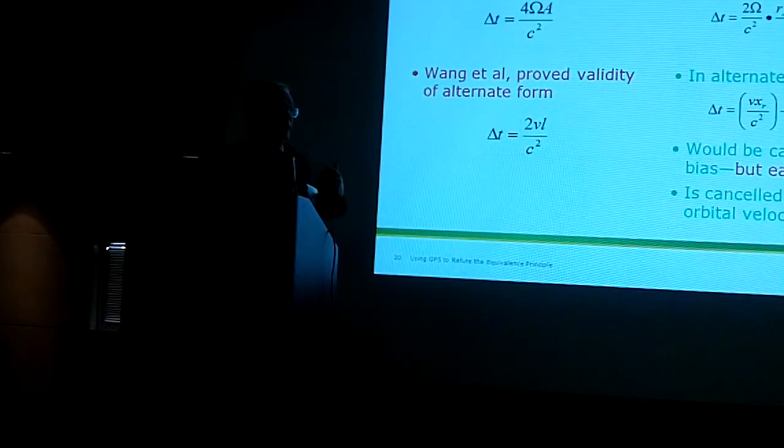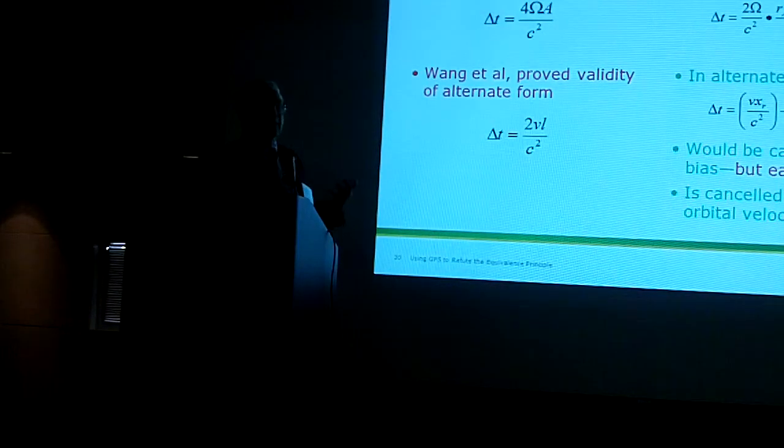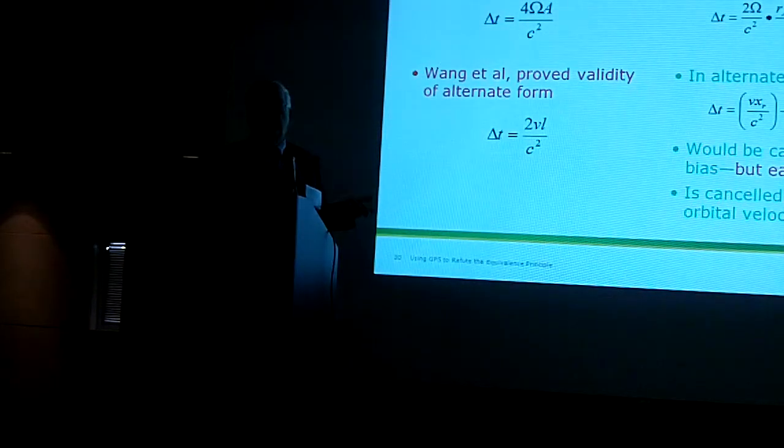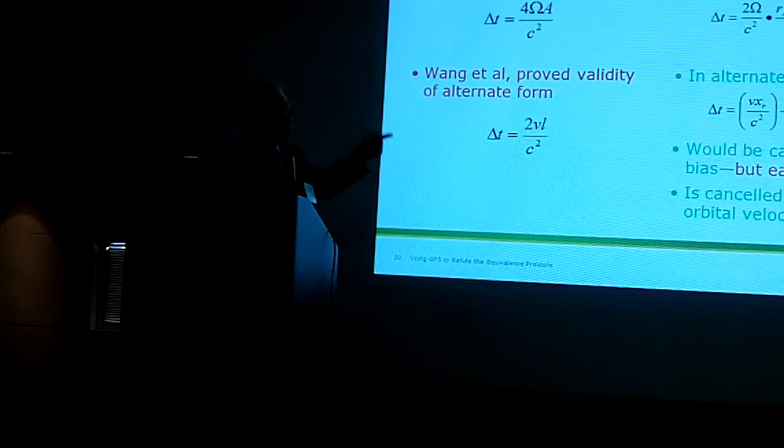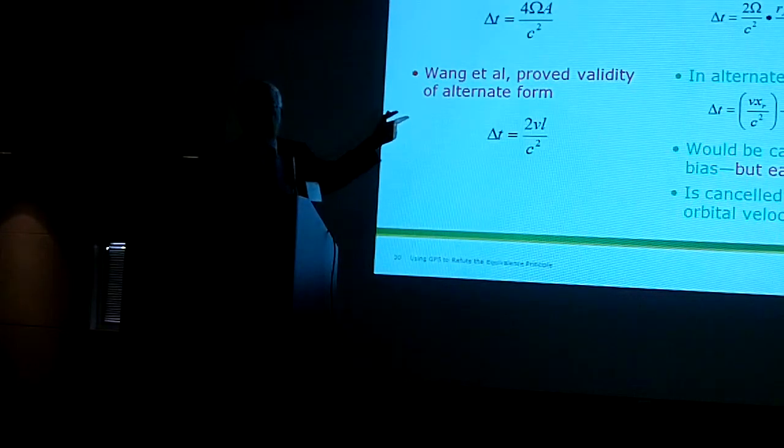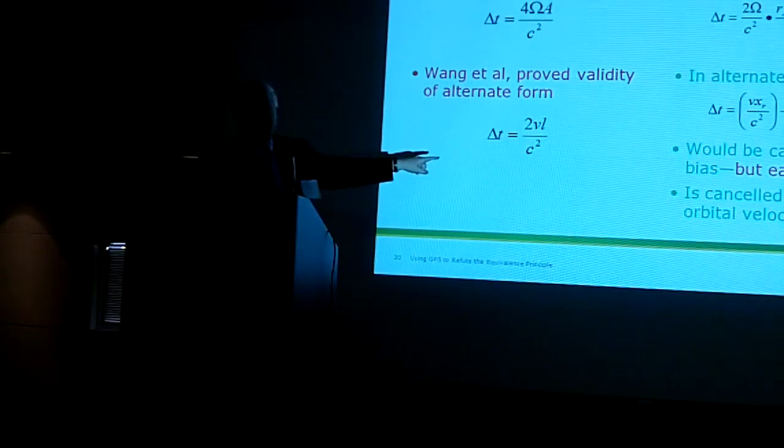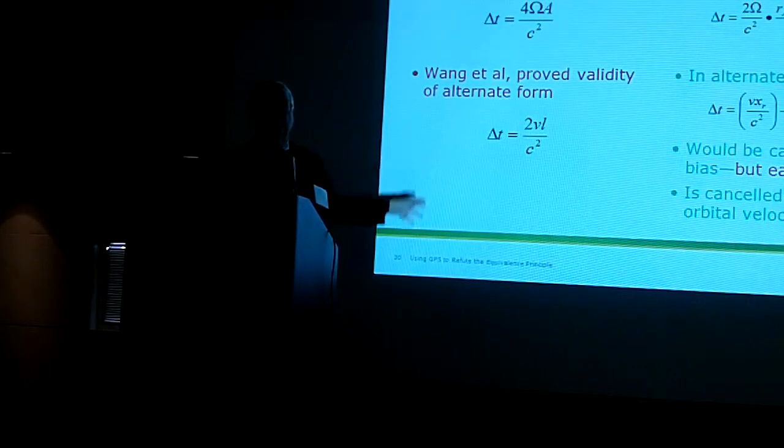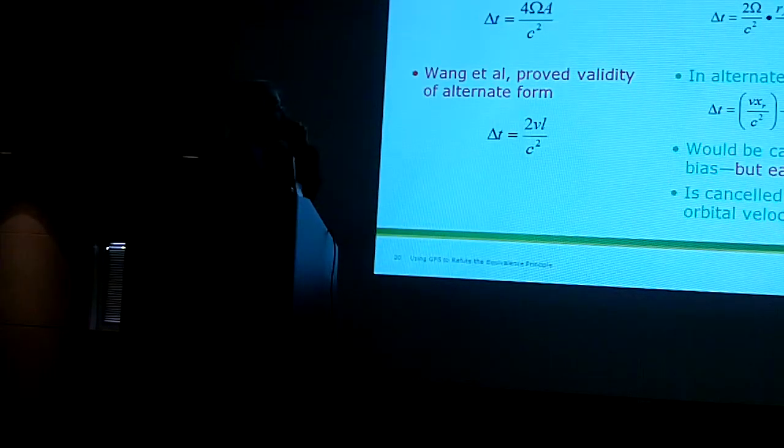But then I could cancel that out if I put a clock bias of minus V over VXR over C squared, which is exactly the clock bias that we showed difference between Lorentz and Celery transformations. Now, we can't do that for all these receivers because they're all spinning in a different direction. So I can't put a clock bias in the satellite that will account for that. So we have to do a Sagnac correction in our navigation. But I can do that for the orbit because the orbital velocity is the same at all receivers.